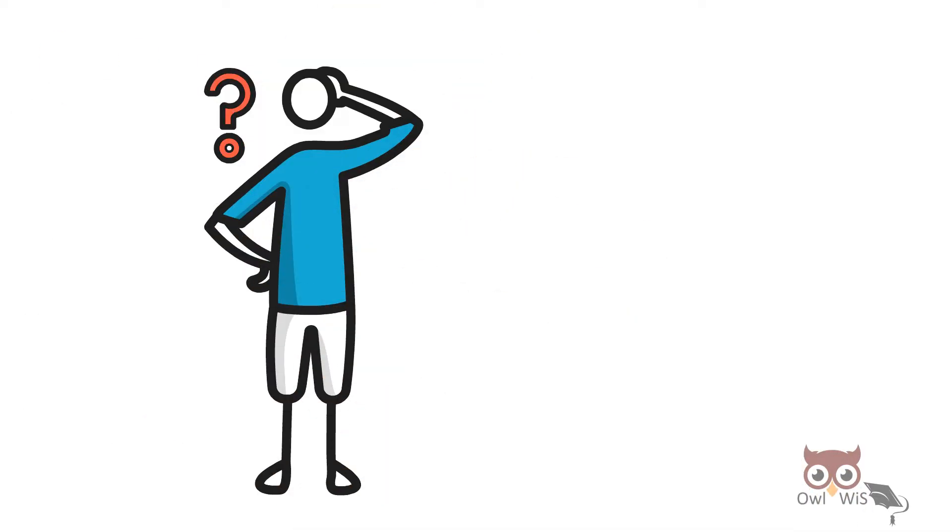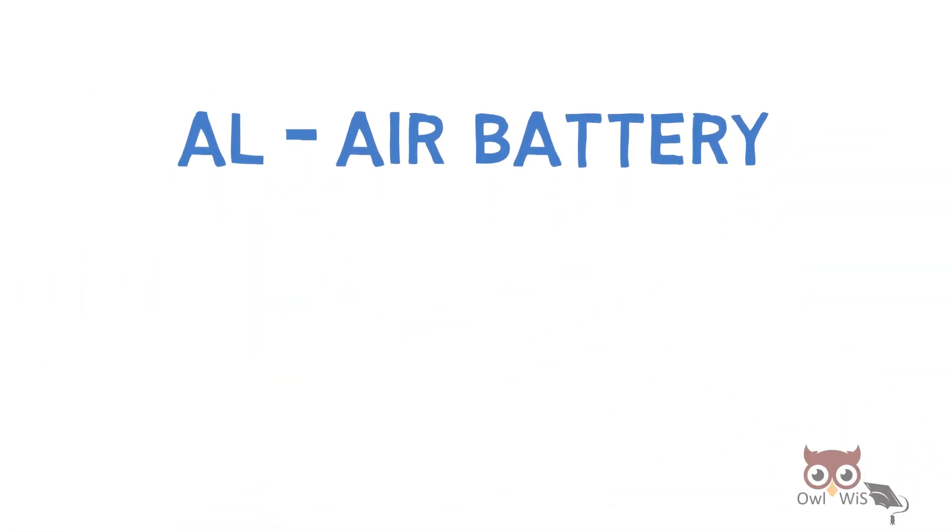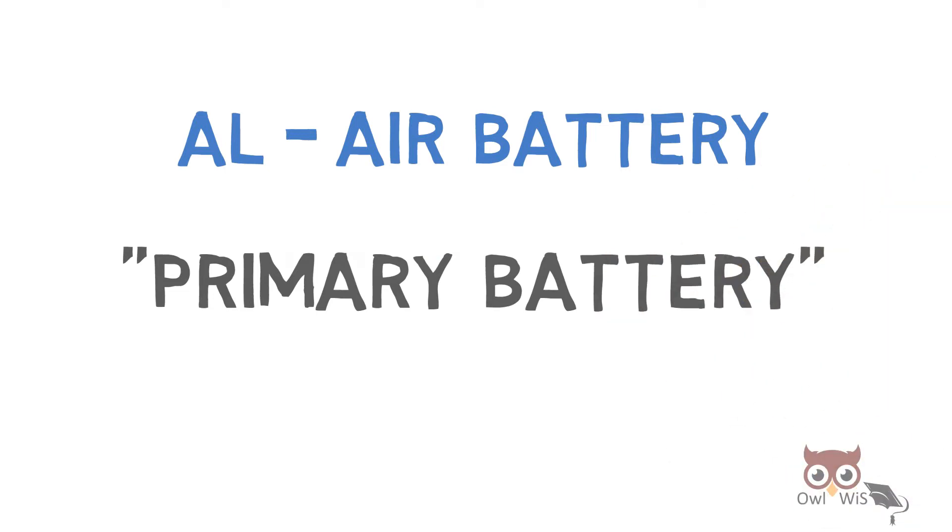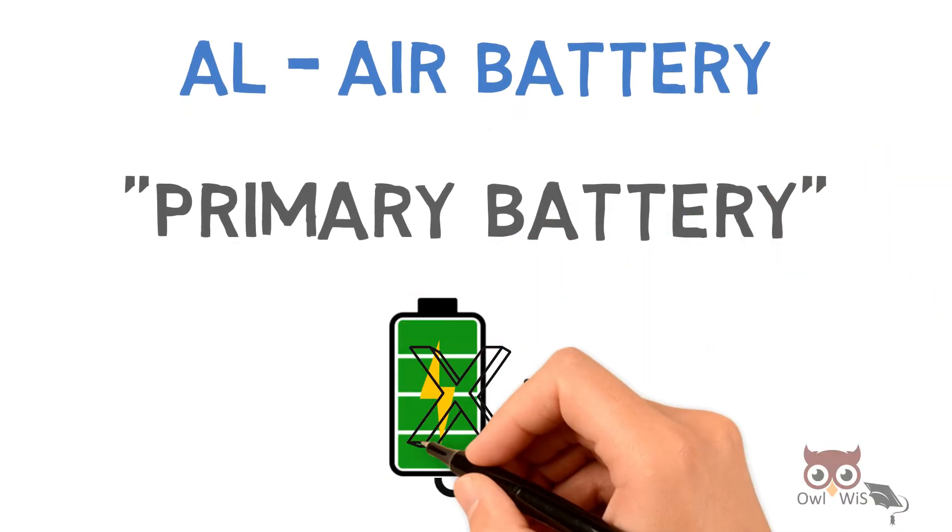What about charging of the battery cell? So the Aluminium air battery is a primary battery. This means that once the battery is discharged, it cannot be recharged again.